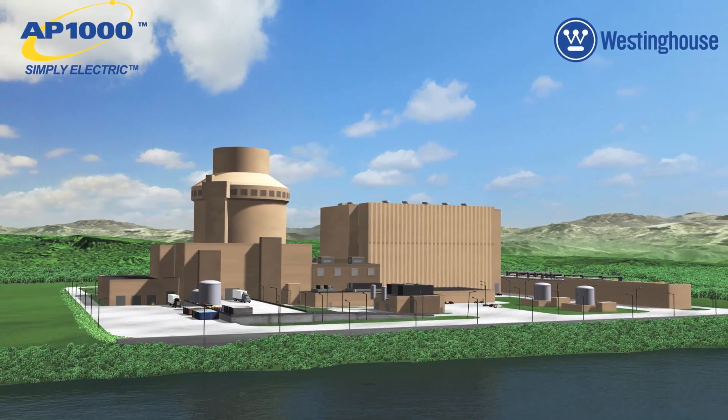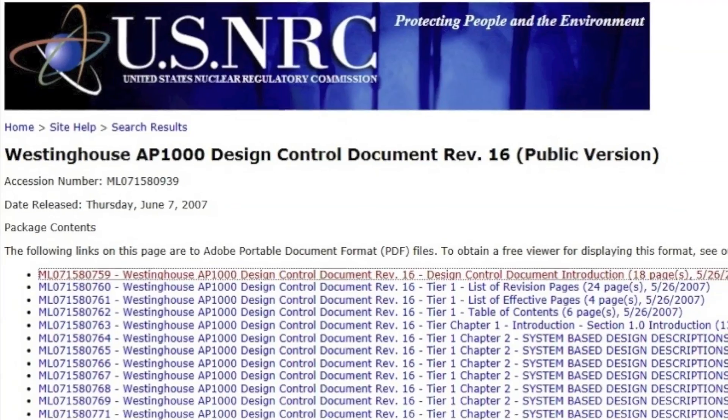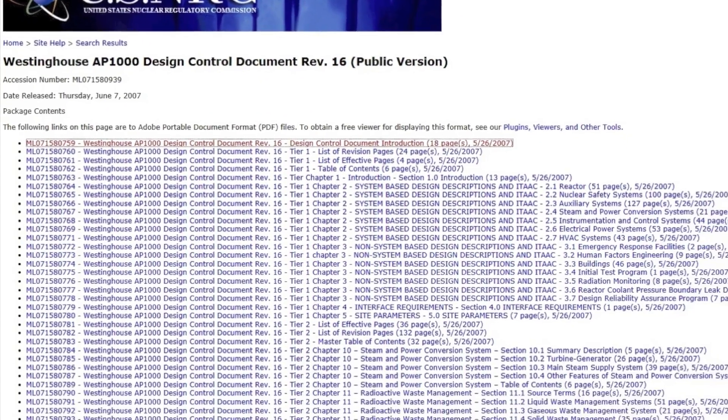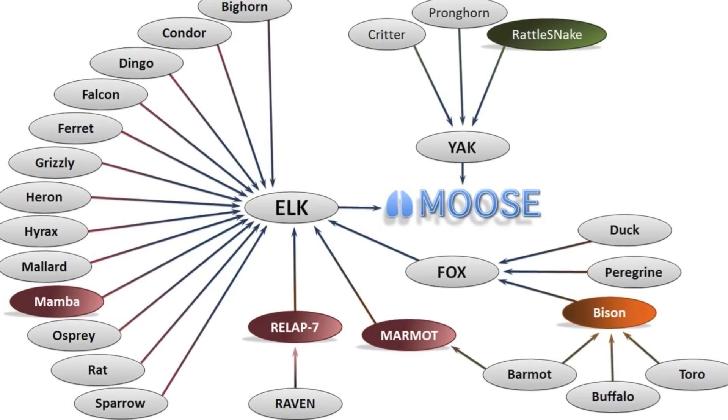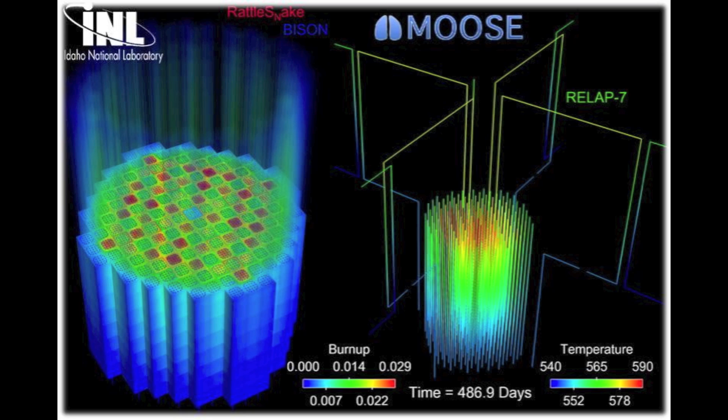The first reactor design that we're looking at is the AP-1000 from Westinghouse. The AP-1000 contains 40,000 fuel rods, and we wanted to use this new capability to couple together Moose-based applications to actually simulate the full core over two fuel cycles within the reactor.